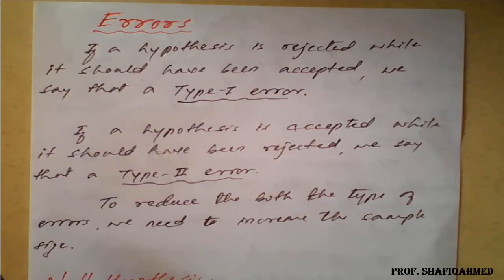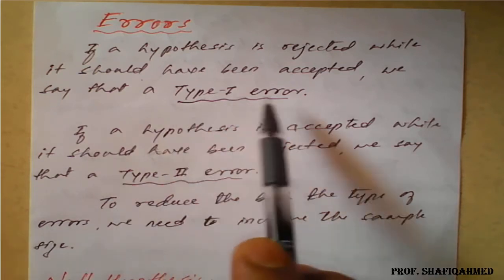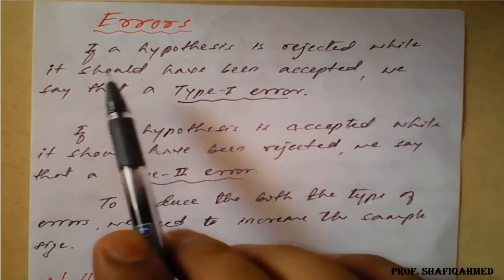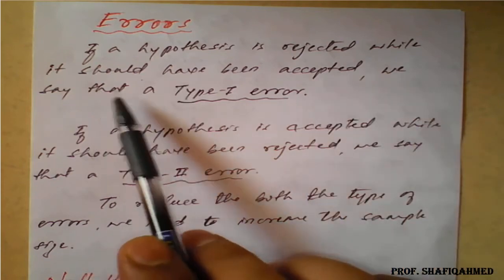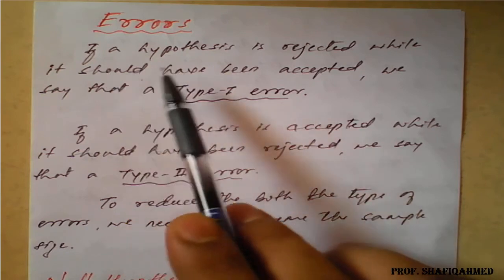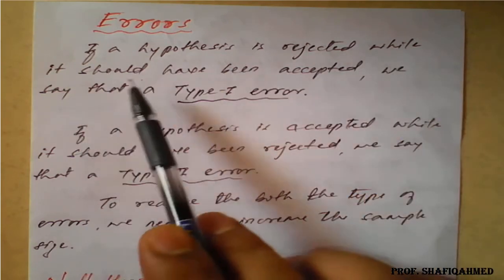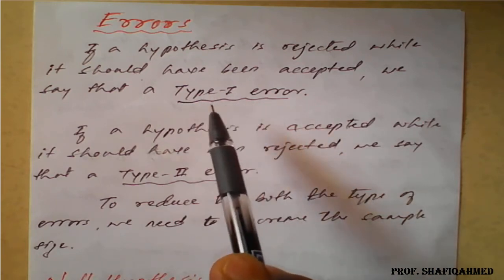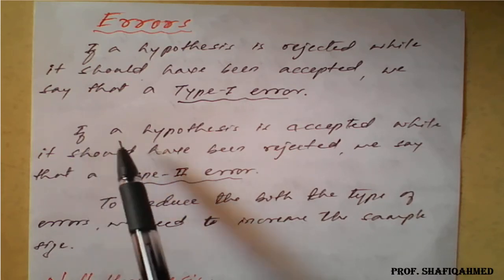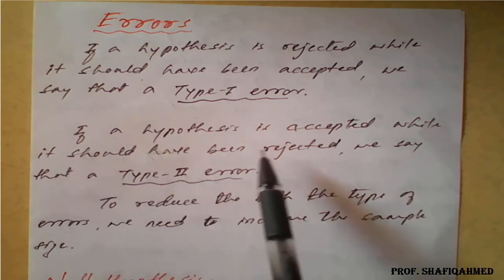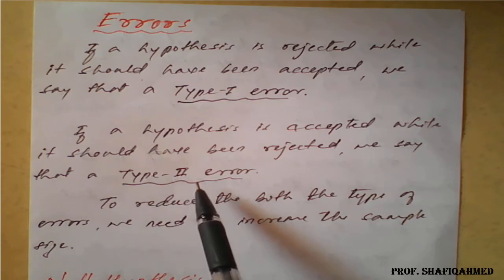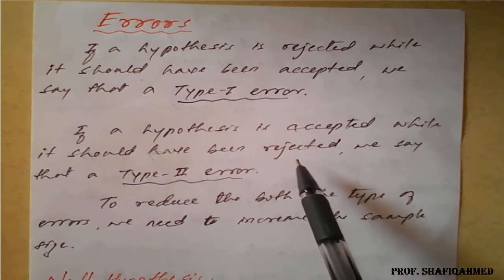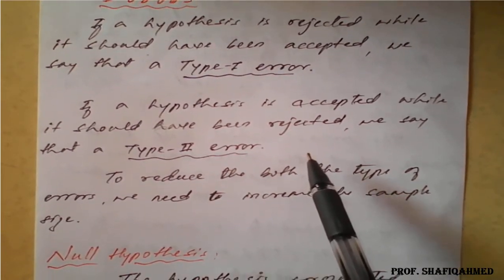We have two kinds of error: Type 1 error and Type 2 error. Type 1 error occurs if a hypothesis is rejected when it should have been accepted — instead of accepting, if you reject the hypothesis, that is a Type 1 error. Similarly, Type 2 error occurs if a hypothesis is accepted while it should have been rejected.